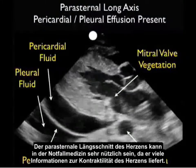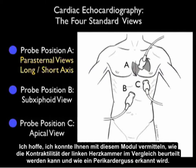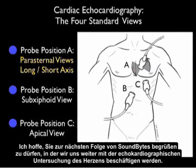In conclusion, the Parasternal Long Axis View of the heart provides a great deal of information about our patient's condition and can be instrumental in emergency care. Through this module, I hope you now have a better idea of how to grade left ventricular contractility from good to poor, and to identify the presence of a pericardial effusion. I hope to see you back as SoundBytes continues and we look further at the cardiac echocardiography examinations.